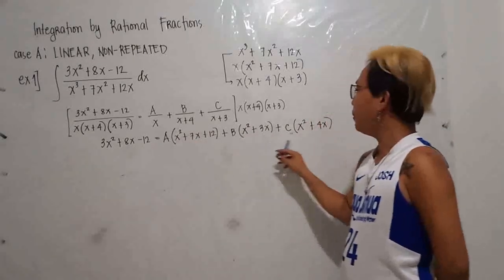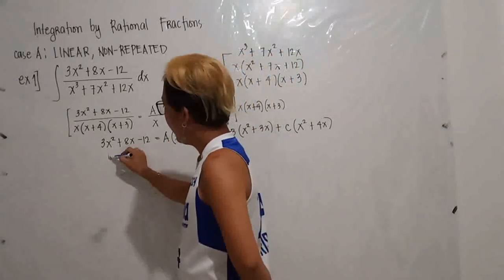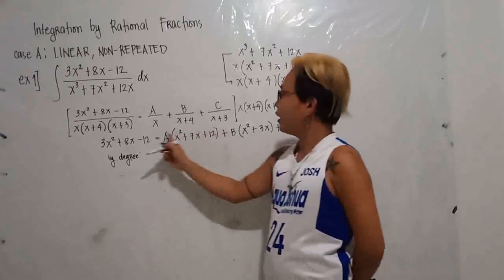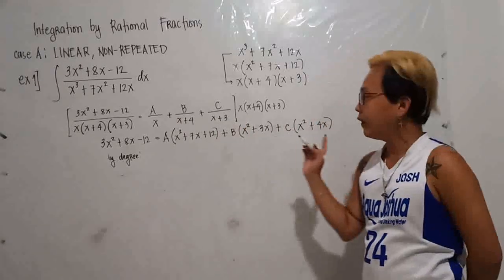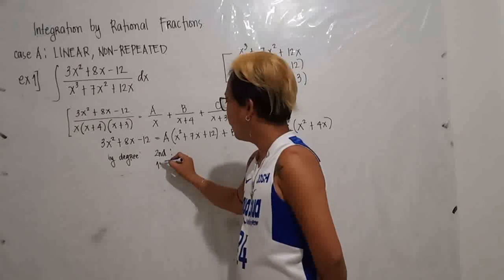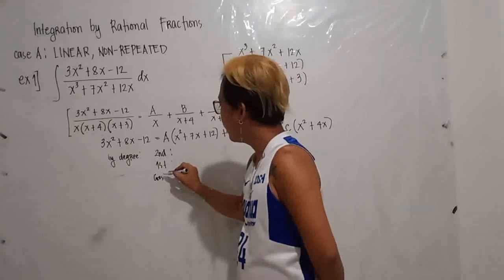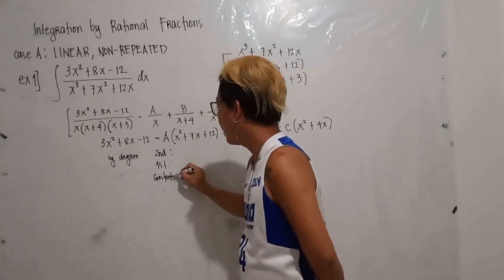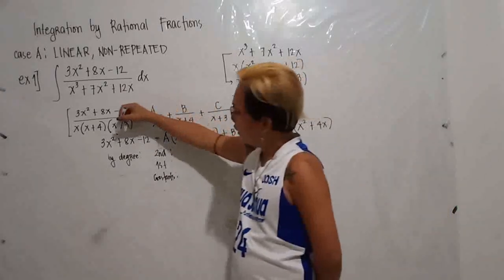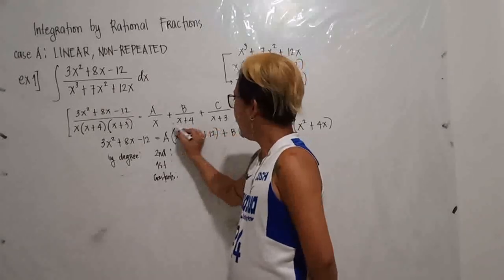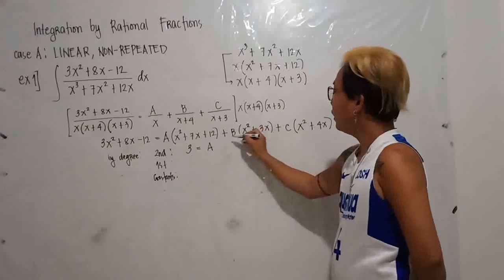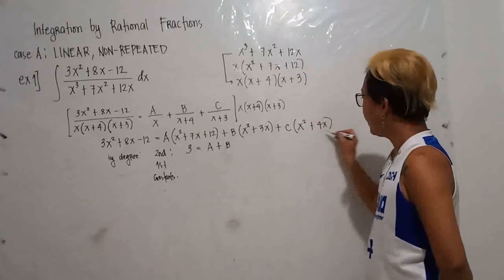The target is to find A, B, and C by comparing coefficients by degree. The highest degree in the equation is second degree, then first, then constants. Getting the coefficient of the second-degree terms: the left side gives 3, and the right side gives A + B + C. For first-degree terms: the left side gives 8, and the right side gives 7A + 3B + 4C.